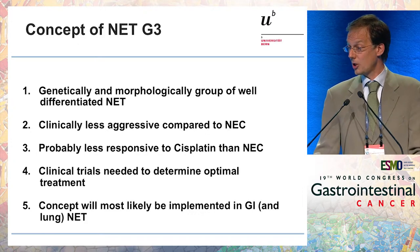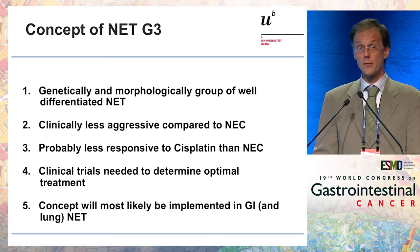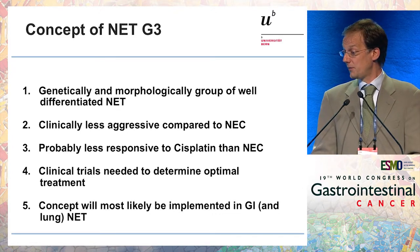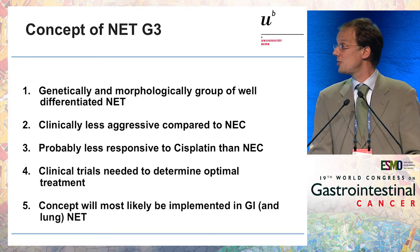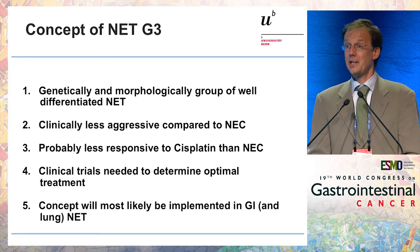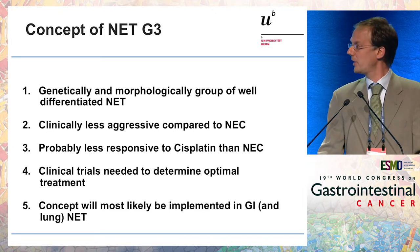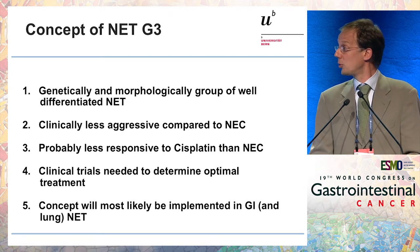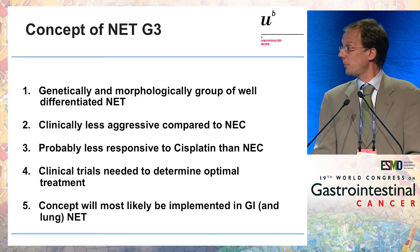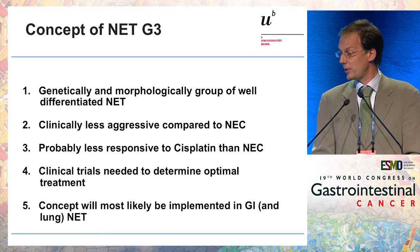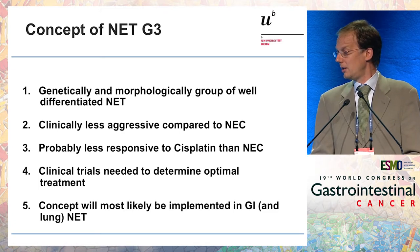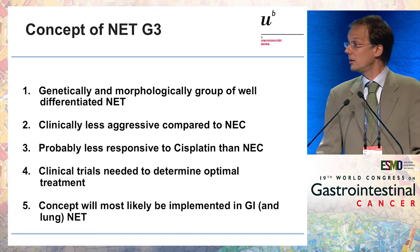What do you take home from this concept? NET G3 is a tumor that is genetically and morphologically distinct — a group of well-differentiated NETs. It is less aggressive compared to neuroendocrine carcinoma and probably less responsive to cisplatin than neuroendocrine carcinoma. There is abstract evidence showing this, interpretable from the Nordic NEC study, though not yet scientifically proven. We need clinical trials to determine what to do with these tumors — before, they were lumped together. This concept, currently valid only for pancreatic NET, will be implemented in GI, and these tumors also exist in the lung.